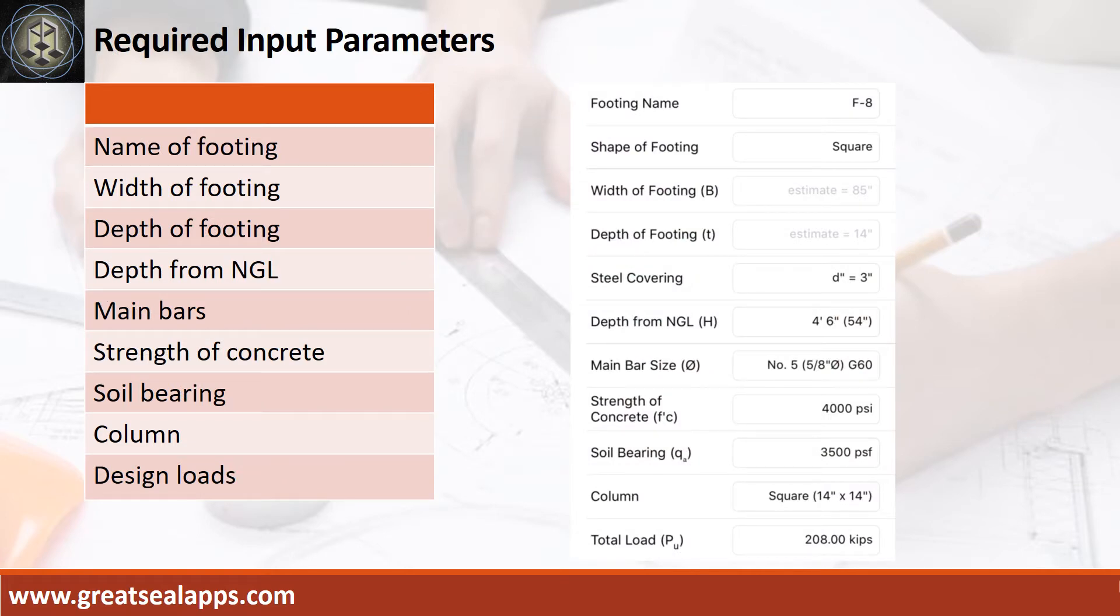Enumerate input parameters required: Footing name, F8. Shape of footing, square. Depth of footing, 14 inches. Depth from natural grade line, 4 feet 6 inches. Main bars, 5/8 inch diameter at grade 60. Strength of concrete, 4000 psi. Soil bearing capacity, 3500 PSF. Column size, 14 inches by 14 inches square. Total load, 208 kips.